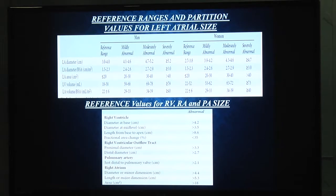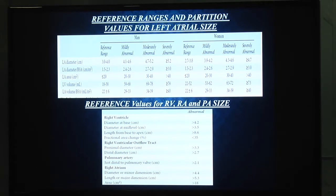Reference ranges and partition values: LA diameter greater than 5.2 cm in males and greater than 4.7 cm in females is considered severely abnormal. Nowadays, it is more valuable to calculate LA area rather than diameter, as it gives a better idea of LA dimensions. For right atrial dimensions, a minor dimension of RA greater than 4.4 cm is abnormal, and a major dimension (length) greater than 5.3 cm is considered abnormal.